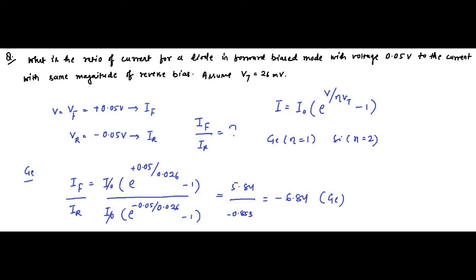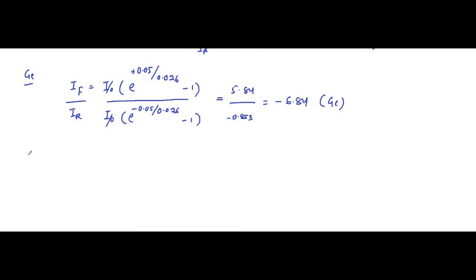Then for silicon with ideality factor equals to 2 that we have to calculate. Simply we will substitute here, it will be 2 into 0.026. So here IF by IR equals I0 e to the power plus 0.05 by 2 into 0.026 minus 1, by I0 e to the power minus 0.05 by 2 into 0.026 minus 1.